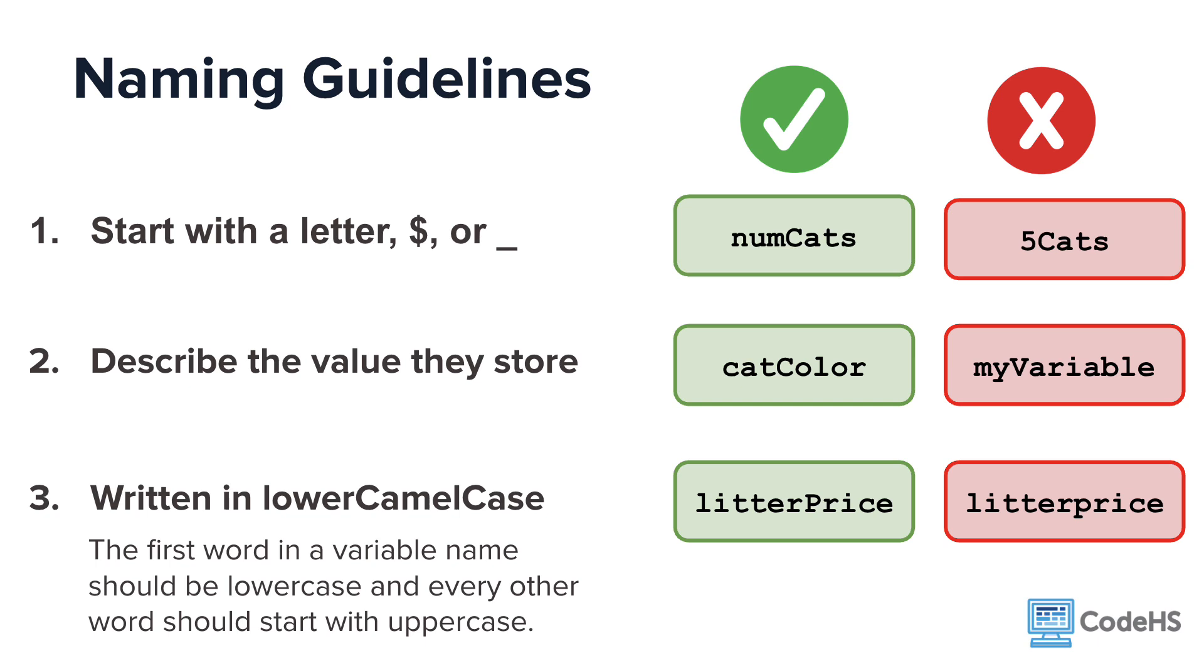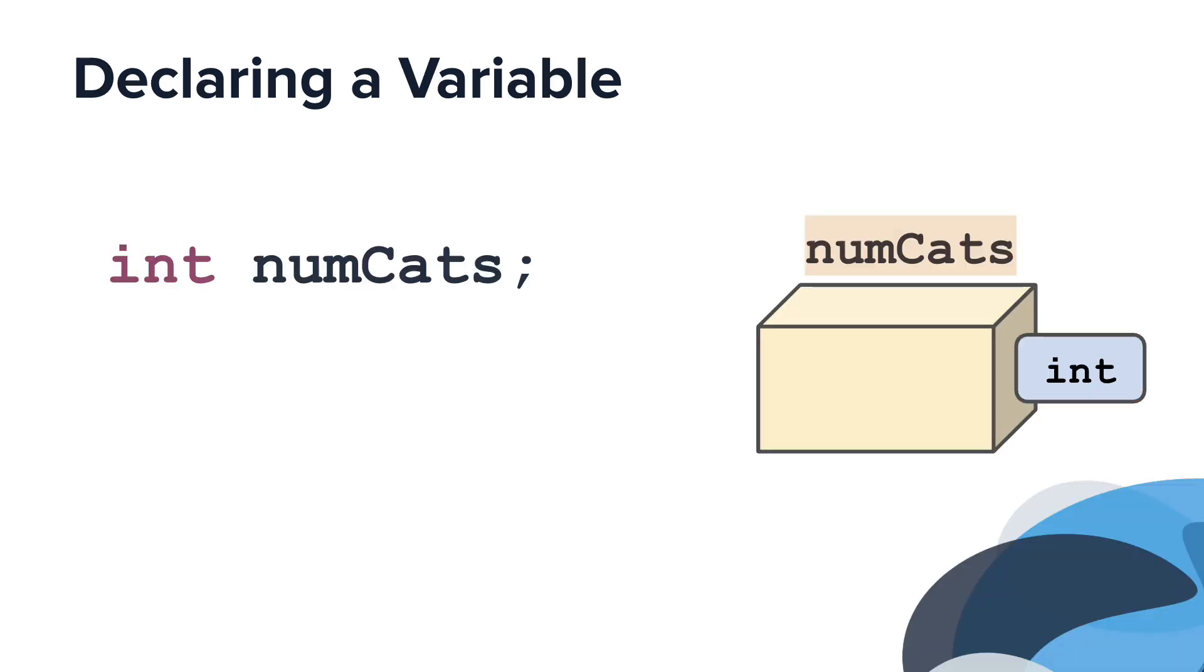The naming convention that Java uses is called lower camel case. Essentially, the first word of any variable name should be written in lowercase, and every subsequent word should be written with the first letter in uppercase. This is mostly to make the code more readable to programmers. Now that there is a variable that is ready to store an integer, the next step is to assign it a value.